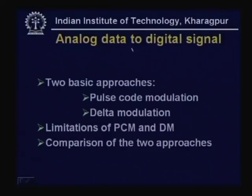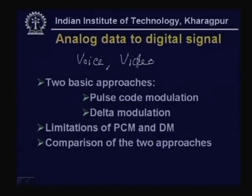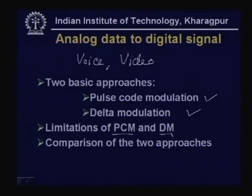For analog data — such as voice or video — to digital signal conversion, you have to convert the analog data into digital form. There are two basic approaches: Pulse Code Modulation (PCM) and delta modulation. We shall discuss both techniques, consider their limitations, and compare the two approaches in detail in subsequent lectures.